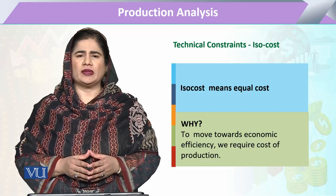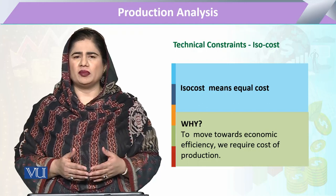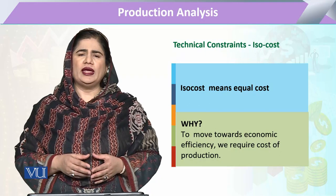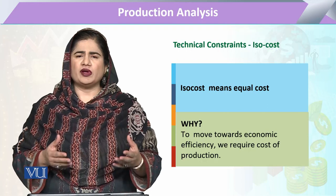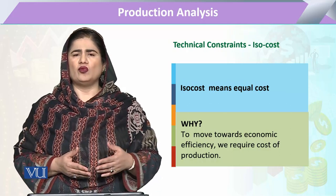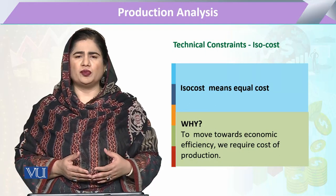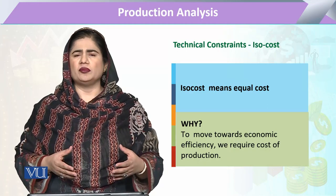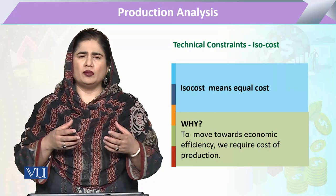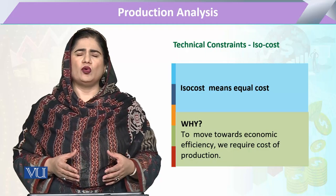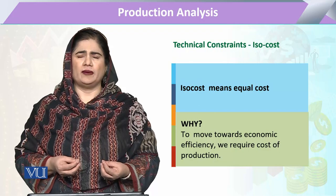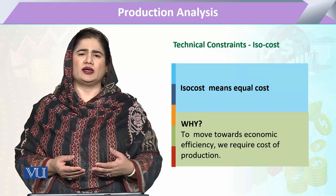اب اگر ہم یہاں پہ دیکھیں تو ISO cost — جس طرح ہم نے ISO quant کے بارے میں کہا تھا کہ various combinations of capital and labor یا various combinations of inputs جو ایک firm یا ایک producer دیکھتا ہے same level of output کو attain کرنے کے لئے — تو ان تمام combinations میں، keeping in view the price of the inputs، ان کی ایک لاگت ہوگی۔